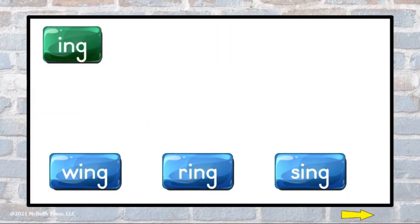When the vowel I is added to the N-G blend, it is read just like the I-N-G suffix. Ing, ing. Read the blue buttons and see a surprise.